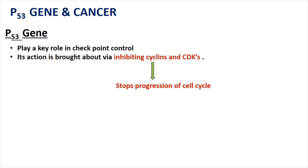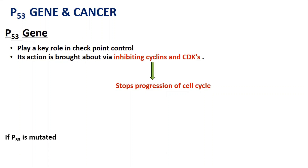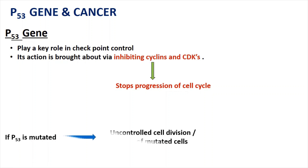You must be wondering how the p53 gene is connected to cancer. Cancer is a situation where abnormal cells divide and multiply at an alarming rate, forming a mass of cancerous cells. When the p53 gene is mutated, it cannot stop the cell cycle even if there is DNA damage. So when p53 is mutated, there is uncontrolled division of mutated cells, which leads to cancer.